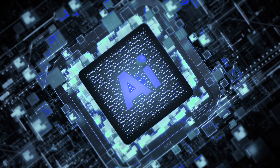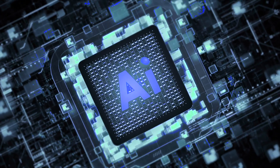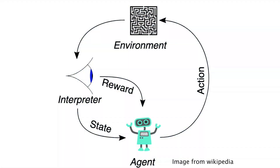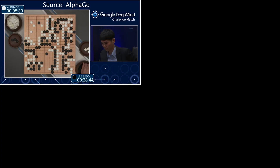Recently, artificial intelligence is advancing rapidly. As a subset of AI, reinforcement learning, or RL, embodies a framework where agents learn optimal behaviors through trial and error, interacting with their environment to maximize rewards over time. RL's framework has led to successes across fields.